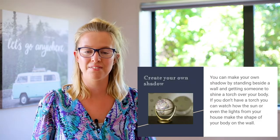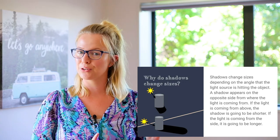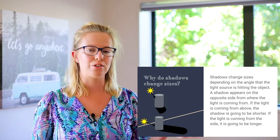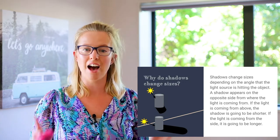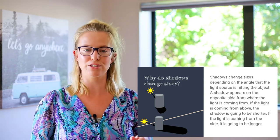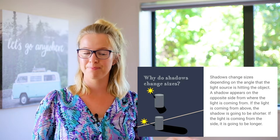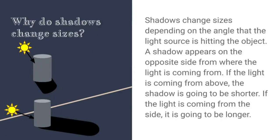Maybe you could pause the video here and go and try that. So here is a good question: why do shadows change size? I think it's all something to do with the light source. Let's focus on the light source being the sun. Shadows change sizes depending on the angle that the light source is hitting the object. A shadow appears on the opposite side from where the light is coming from.